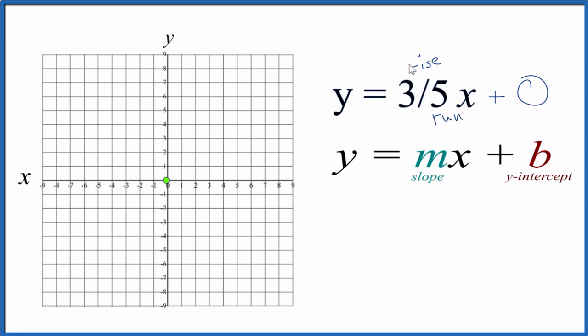So we're going to rise one, two, three, and then run one, two, three, four, five. So we go to our y-intercept, we rise one, two, three, and we go over one, two, three, four, five.